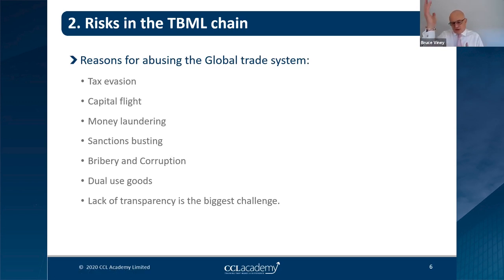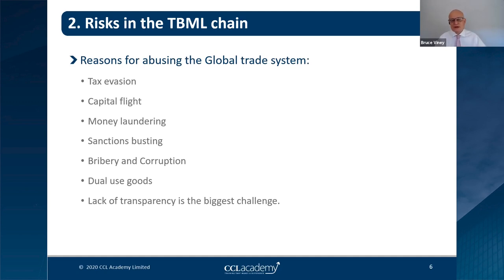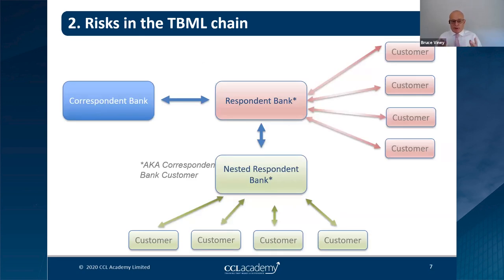There are many reasons people abuse the global trade system: tax evasion is a big one, sanctions are huge, and corruption and bribery almost act as enablers of trade-based money laundering — they go hand in hand. The biggest challenge, however, is that we only deal in documents, not goods. We don't go out and see the goods; we rely on what we're told about goods, shipments, discharge, and loading. We lack transparency and can be hidden from what's actually going on.